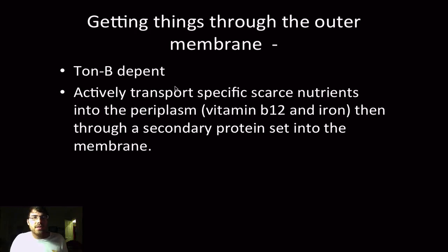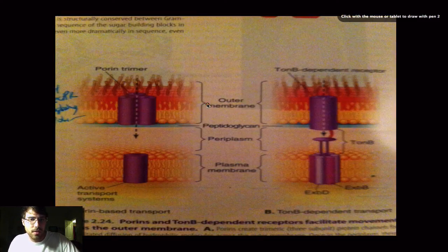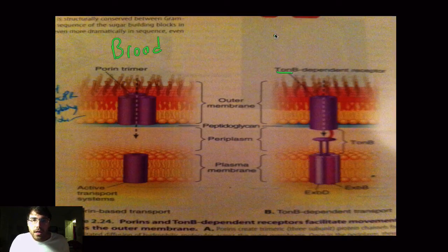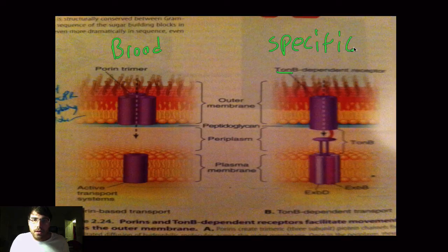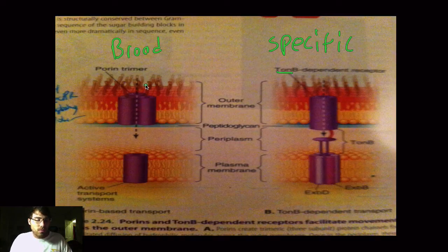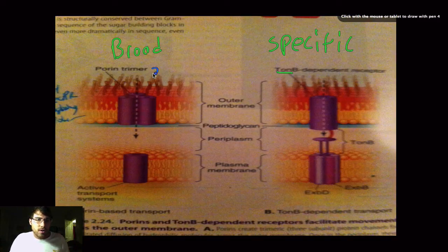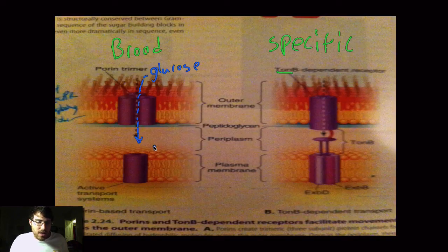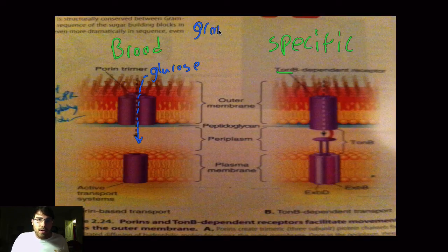Okay, another example would be the TonB-dependent receptors. These actively transport specific, scarce nutrients into the periplasmic space, such as like vitamin B12 or iron, and then through a secondary protein set into the bacterial membrane and into the bacterial cell. So, here's these two pictures here that I have. So, porins, this is broad in its means. This TonB over here is very specific in its action. So, porin trimer, tri meaning three, myr meaning molecules or parts. So, it's made up of three different protein sets. But I would say porin trimer. So, let's just say glucose. Glucose is just an example of something that's small and polar. So, it's going to go through here and into the periplasmic space of the gram-negative bacteria. Remember, we're all talking about gram-negative here.